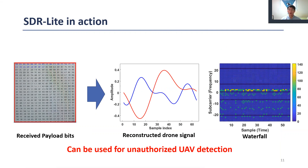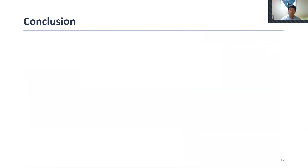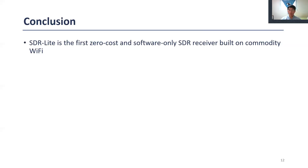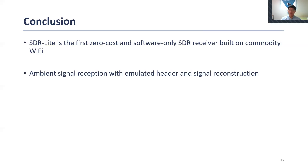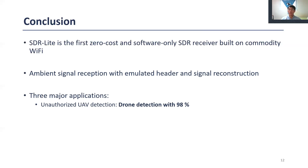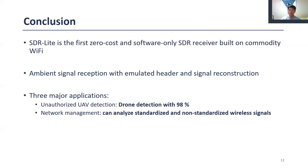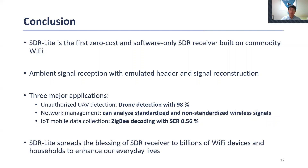This result can be used for unauthorized UAV detection. In summary, we proposed the first zero-cost software-only SDR receiver called SDR Lite. SDR Lite can receive an ambient signal through an emulated header and reconstruct the ambient signal. We showed the effectiveness of SDR Lite through three major applications: for unauthorized UAV detection we achieved 98% accuracy, we could also monitor standardized and non-standardized signals, and SDR Lite enables high-reliability ZigBee recording with a similar error rate of 0.56%. Finally, SDR Lite spreads the benefits of SDR receiver functionality to billions of Wi-Fi devices and households to enhance our everyday lives.